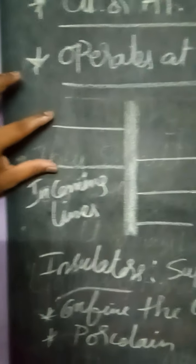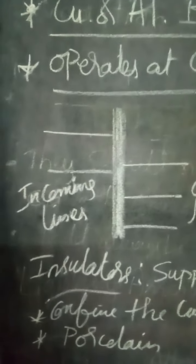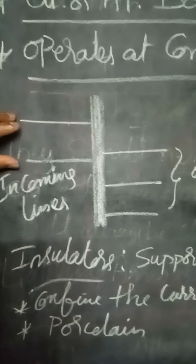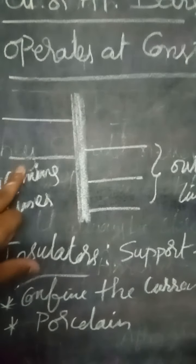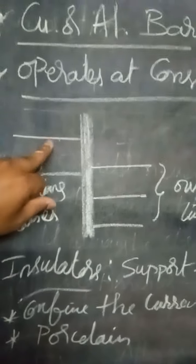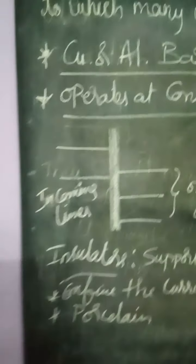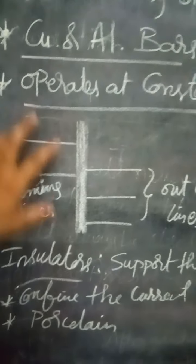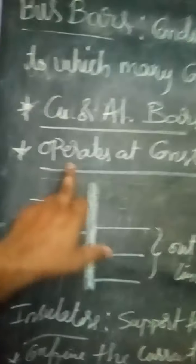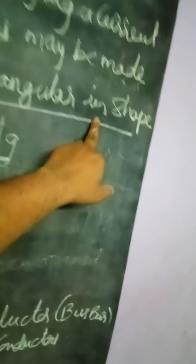So there are different incoming lines — one power plant gives input to the substation, and we may also get input from another substation. The current flowing from each source may be different, but the voltage will be constant because we have the same transmission voltage. Bus bars operate at a constant voltage.